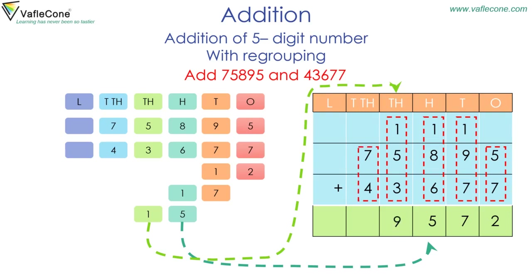Moving on to the ten-thousands place: seven plus four is equal to eleven, or one lakh and ten thousand. So we place them as per their place value. The sum of seventy-five thousand eight hundred ninety-five and forty-three thousand six hundred seventy-seven is one lakh nineteen thousand five hundred and seventy-two.